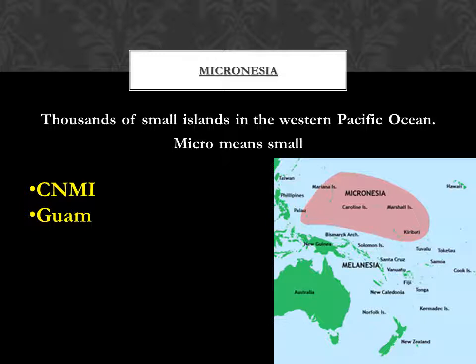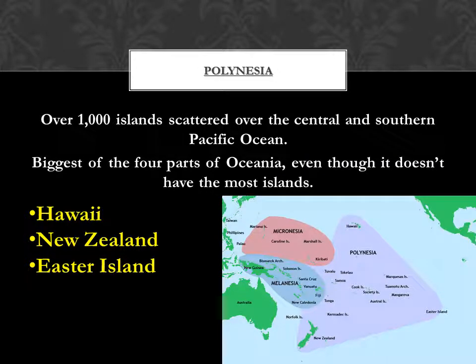And this is where I used to live. In class, we're also going to talk about Polynesia, specifically Hawaii, New Zealand, and Easter Island. In Polynesia, there are over 1,000 islands scattered over the central and southern Pacific Ocean. If you look on the map, you'll see Polynesia looks like a triangle, and just by looking at it, you can tell it's the biggest of the four parts of Oceania — but even though it's the biggest, it does not have the most islands.